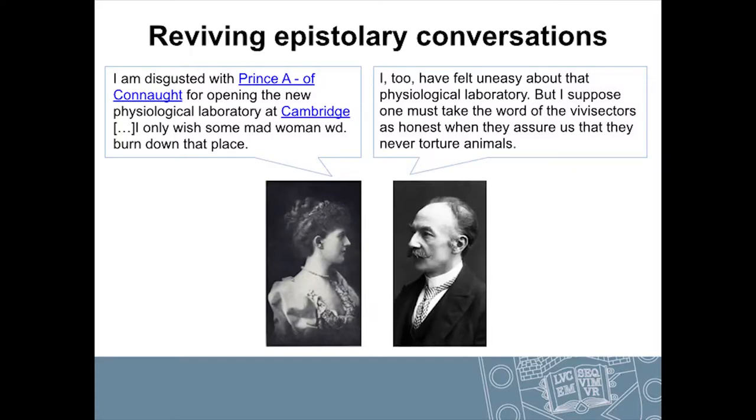This is one of my favourite quotes, because she's disgusted with Prince Arthur of Connaught for opening the new physiological laboratory at Cambridge, and she's looking for some mad woman to burn it down — she's not going to do that herself, but a more radical version will, hopefully. Hardy is a little more muted and controlled in his response, and it shows how there's a weighing up of their opinions and decisions. I really think there's historical value in looking at what she's saying, because at that time the animal rights movement was really closely intertwined with first wave feminism.